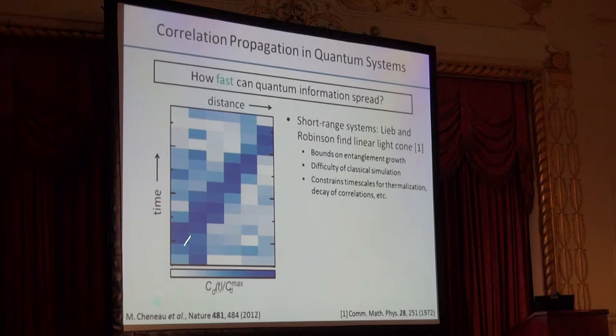This type of experiment with nearest neighbor couplings has been realized in the lab by Emanuel Bloch's group a few years ago. Here too you can see that they have this linear propagation of correlations in this system.